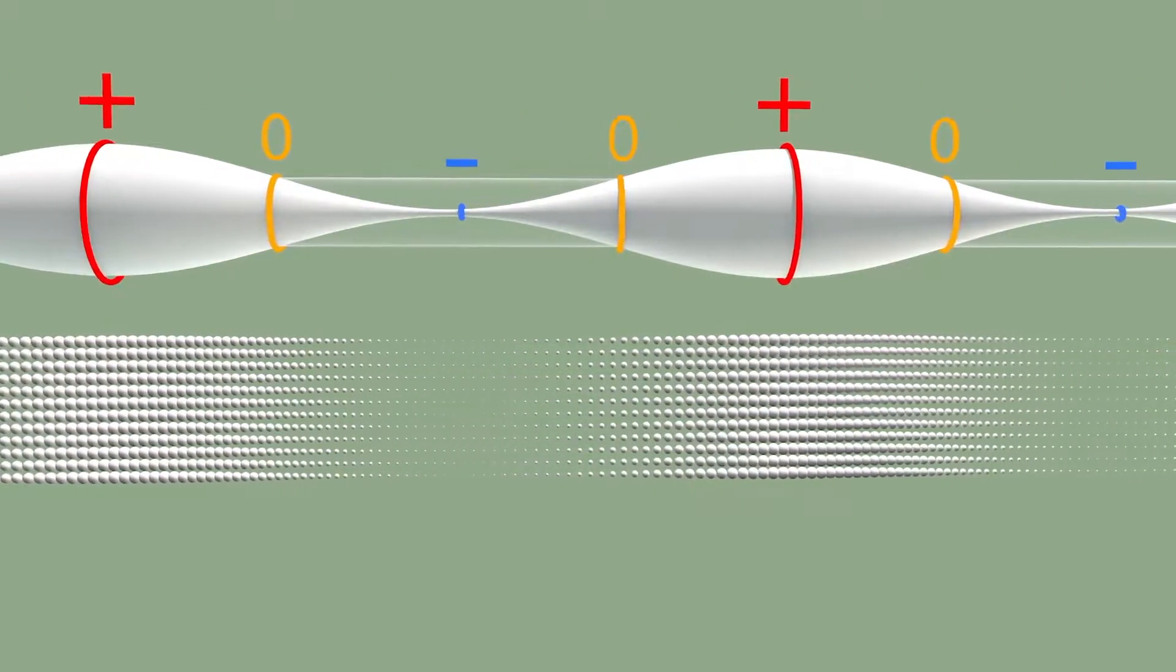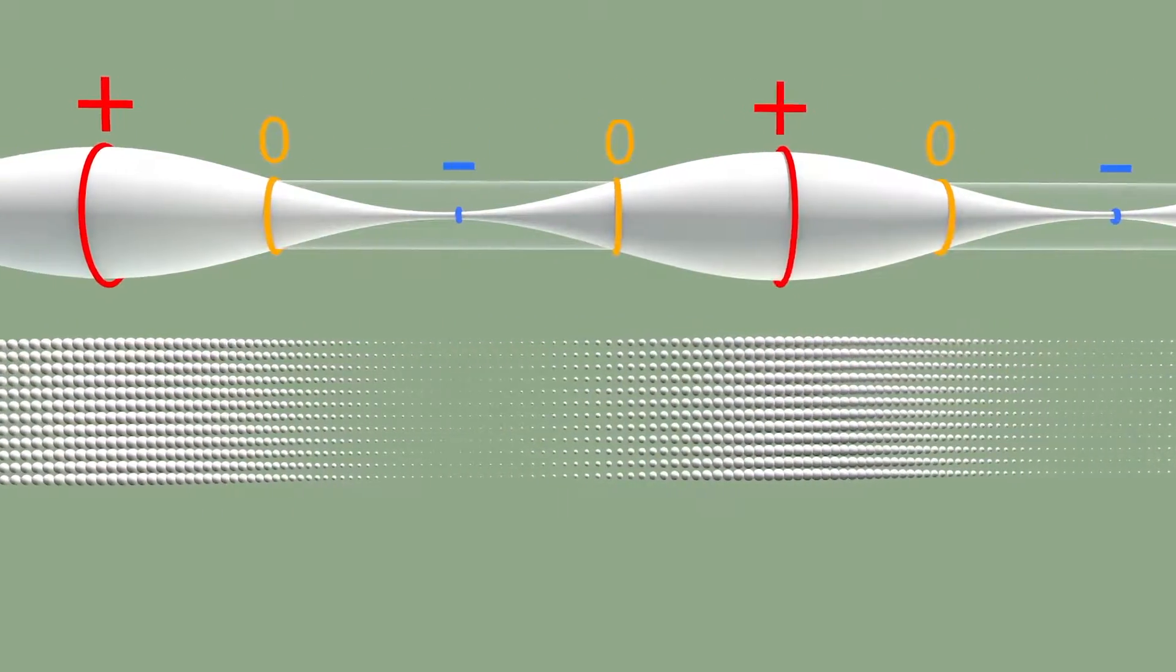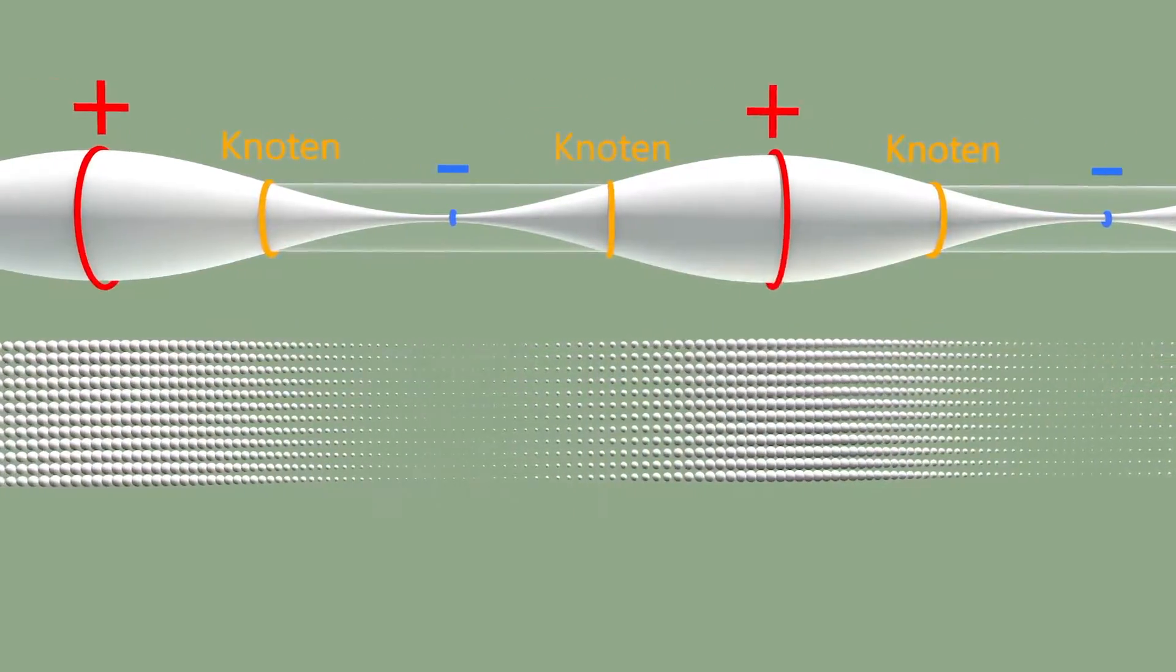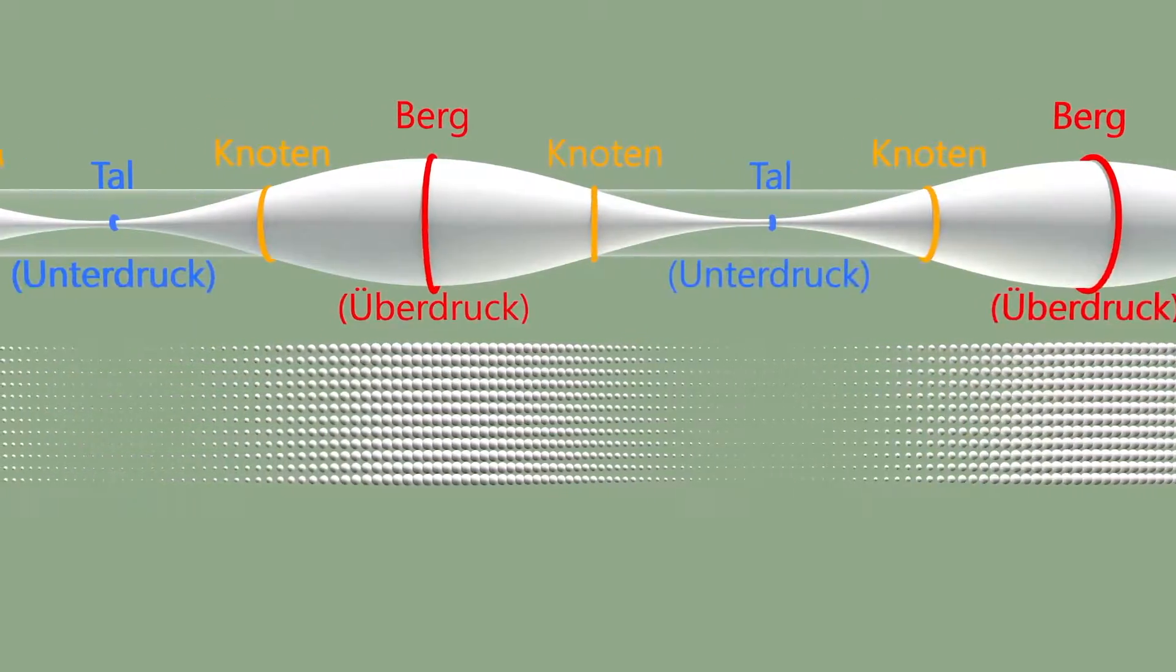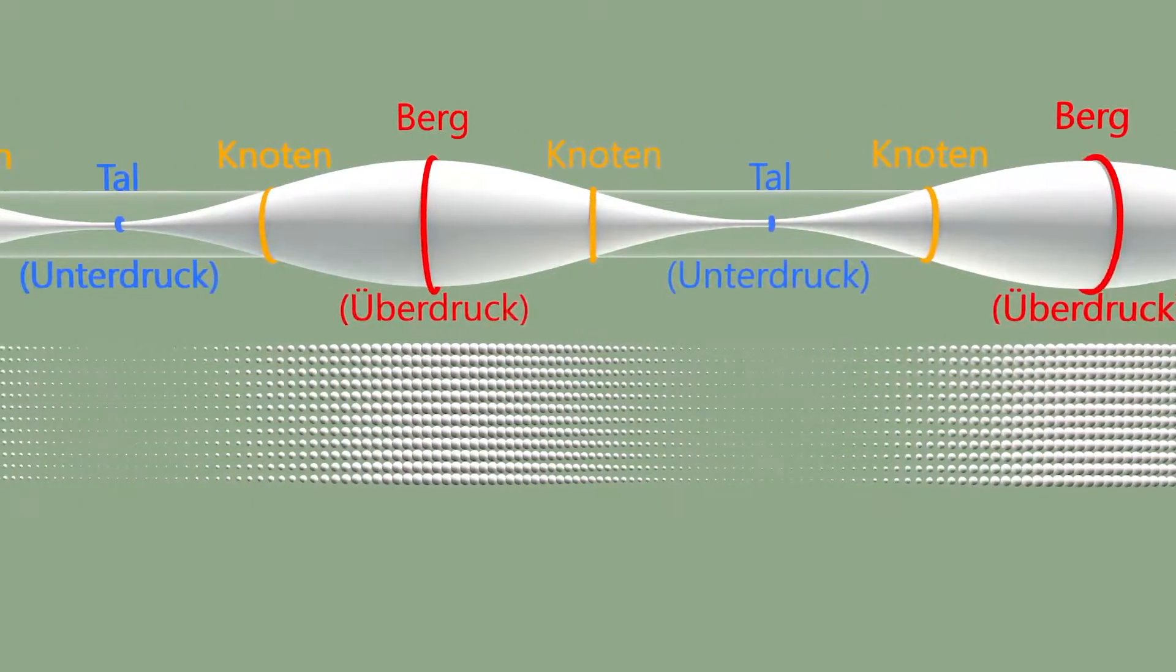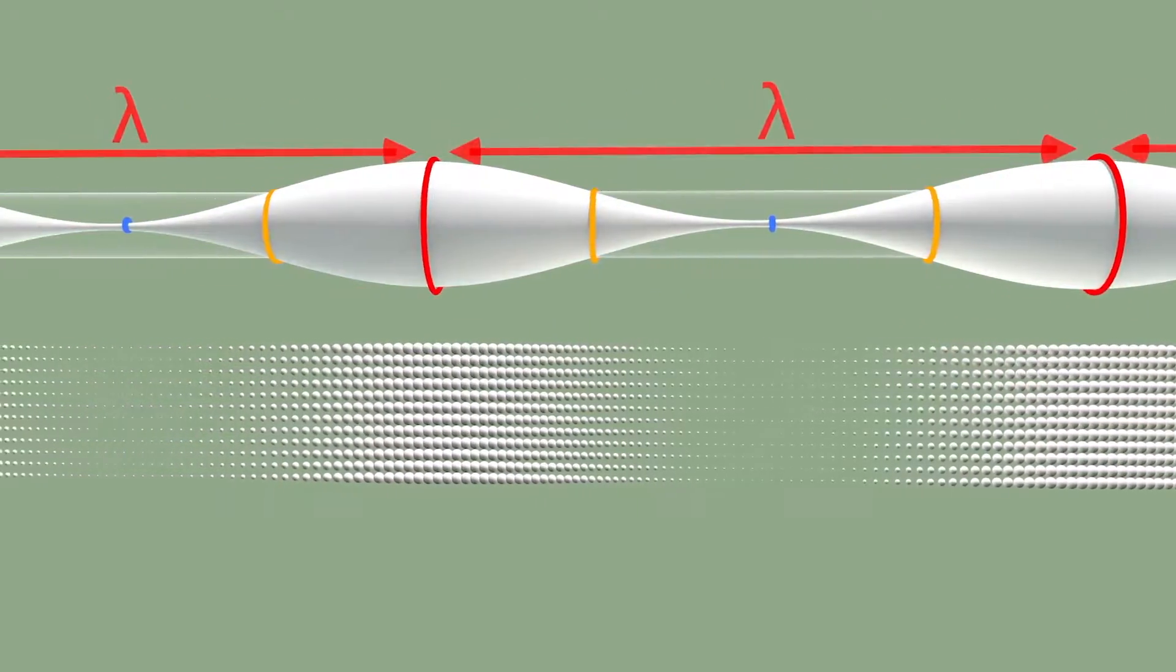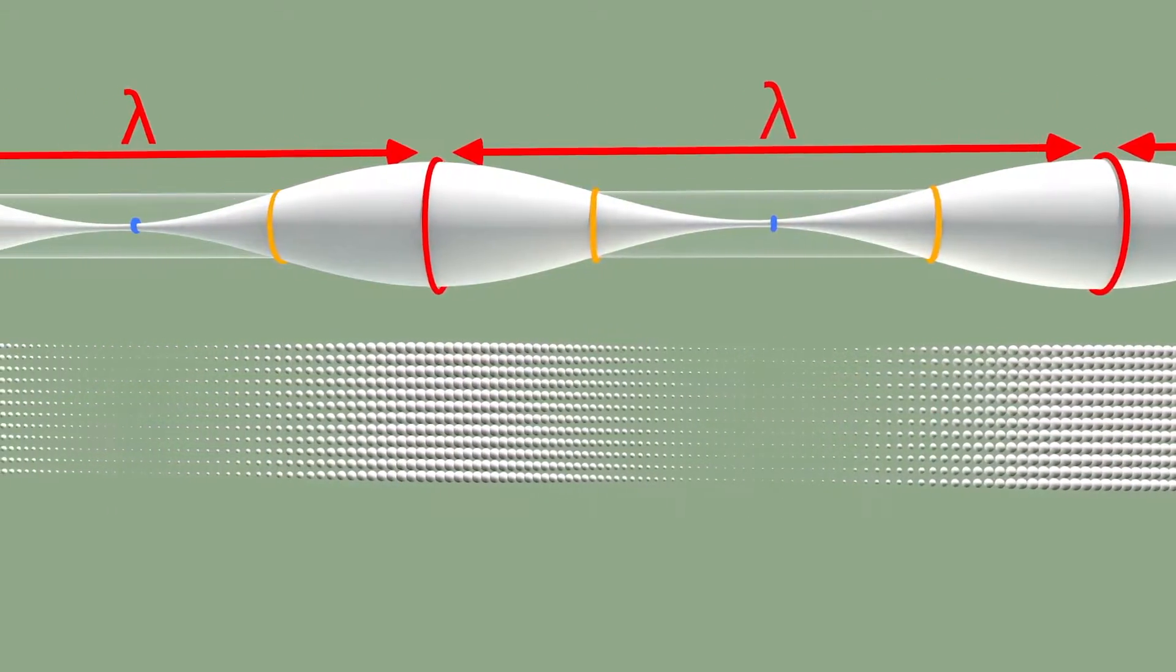Places with zero pressure are called wave nodes. With maximum pressure, wave crests or wave troughs are created depending on the direction. The distance between two wave peaks is called wavelength, pronounced lambda.